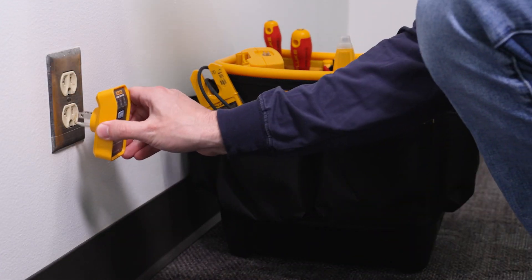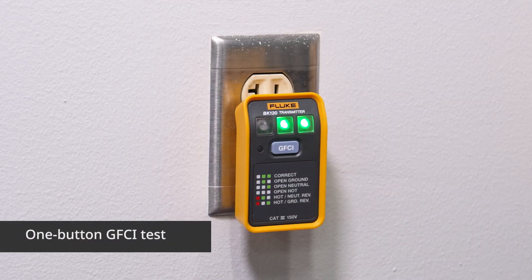First, plug the transmitter into the outlet you want to test. Make sure that the outlet is operating properly with the correct LED pattern.